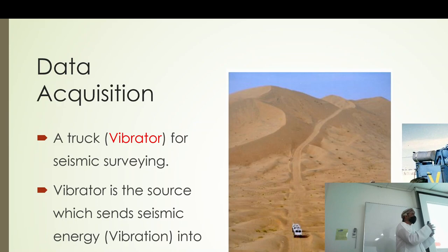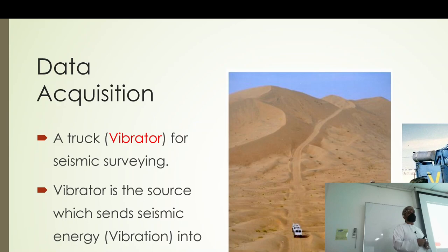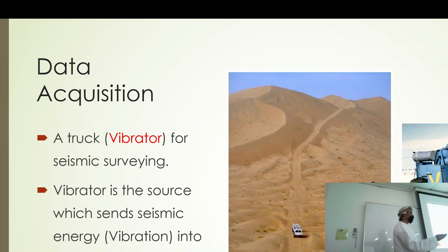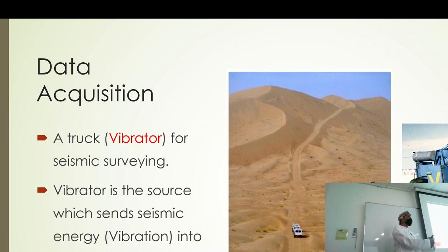Each situation has its own type of technique or source. In some cases you cannot drive a vibrator into the mountains, so you might use dynamite instead — making small explosions by digging a hole 10 to 20 meters deep, placing dynamite, and detonating it. It sends energy with the same characteristics as a vibrator, with some differences in processing, but the final product — a section representing subsurface geology — is the same.